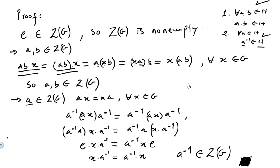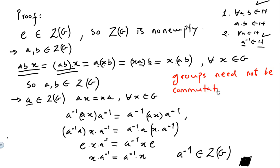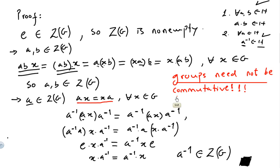This proves the theorem that the center of a group G is a subgroup of G. I want to call your attention to a very important detail: groups need not be commutative. The proof only uses the center and group operations such as inverses. The group does not need to be commutative for the center to be a subgroup — this is very important.